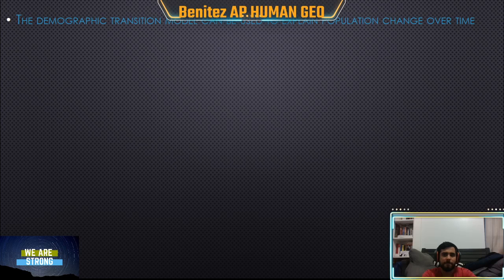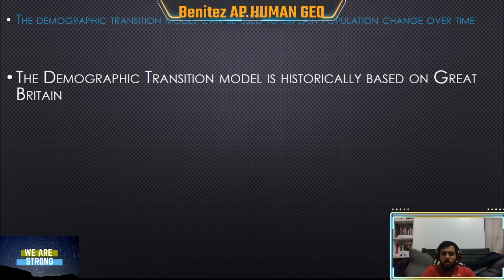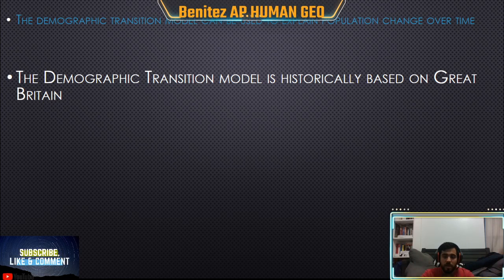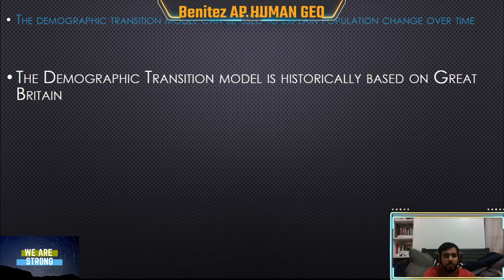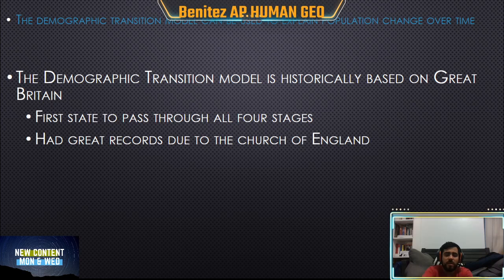Who created the Demographic Transition Model, and what is it based on? It's actually based on Great Britain, because Great Britain was the first country in the entire world to become industrial during the Industrial Revolution. They used machinery to speed up the work process and create a bigger, more advanced country. Great Britain was also the first to pass through all four stages. Additionally, the Church of England kept detailed records, so we have a lot of information tracking how many people were dying and how many were being born.